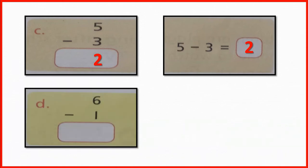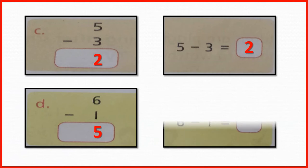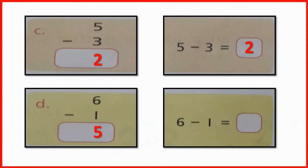The next one is 6 minus 1. Now, you tell me: when 1 subtracts from 6, what number comes? Yes, the number comes 5. Now, subtract 1 from 6 in horizontal form. When 1 subtracts from 6, the number remains 5. So, the answer is 5.